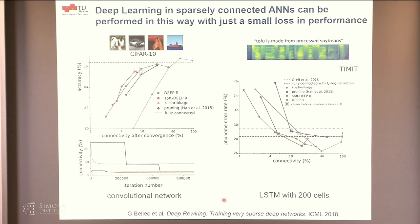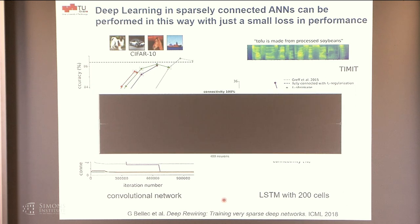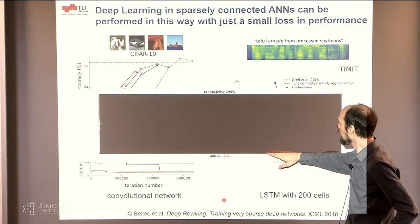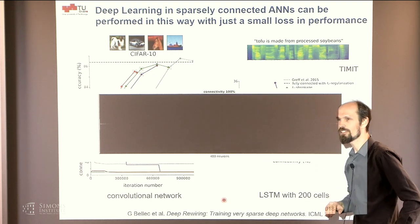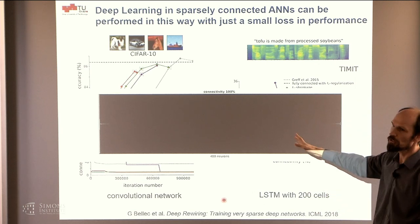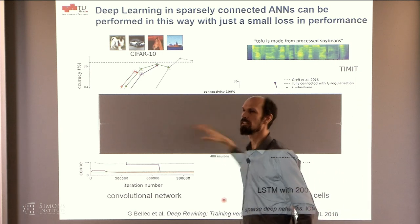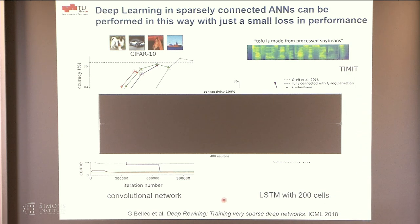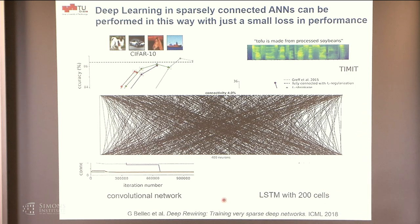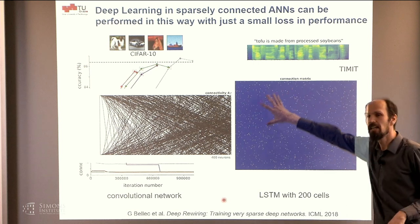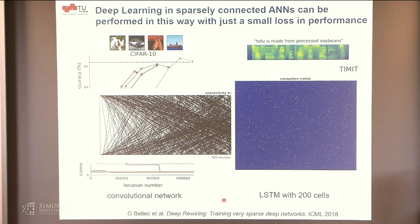On TIMIT, using an LSTM, DeepR achieved very good performance at 4 percent connectivity. A fully connected 400×400 layer is indistinguishable from a dense block, whereas pruned to 4 percent the sparse connectivity matrix is clearly visible and reasonable — something that could be implemented in a resource-limited system.